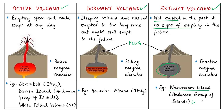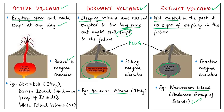An extinct volcano has not erupted in the past and shows no signs of future eruption, indicated by an inactive magma chamber. An example is Narcondam Island in the Andaman group. A dormant volcano is like a sleeping volcano — it has not erupted in a long time but might erupt in the future, characterized by a slowly filling magma chamber. Vesuvius volcano in Italy is an example of a dormant volcano.